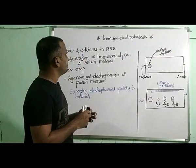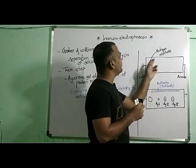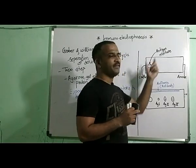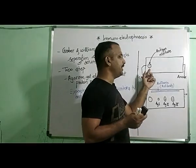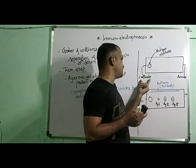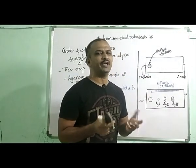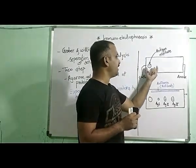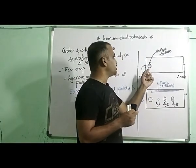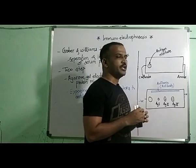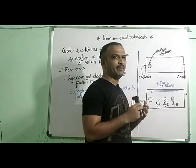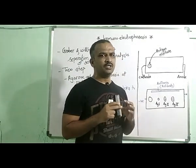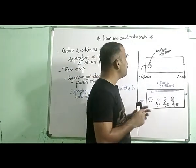In the first step of immunoelectrophoresis, the antigen mixture or the proteins to be analyzed are added into a well which is present towards the cathode or negative electrode. When electrophoresis is done, this particular antigenic mixture or the proteins migrate towards the positively charged anode depending on their charge, shape, size and weight.